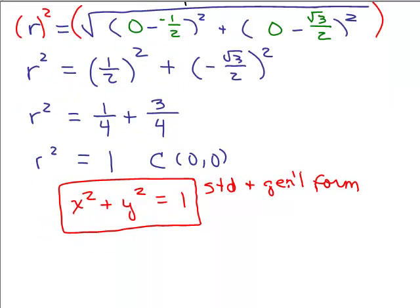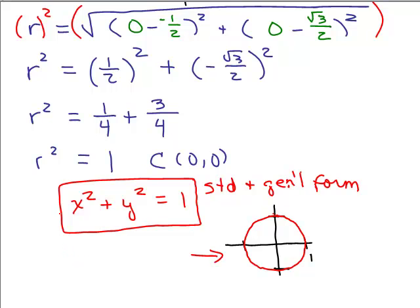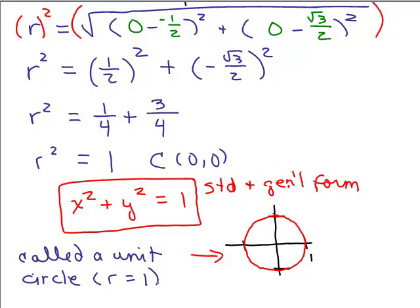I also said to draw a picture — draw the circle. It looks like this: centered at the origin with a radius of 1. And this is called a unit circle. A unit circle just means the radius is equal to 1 unit.